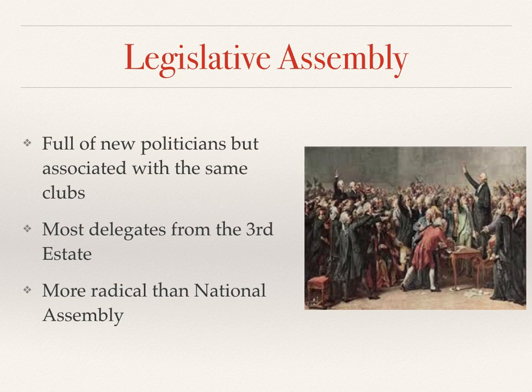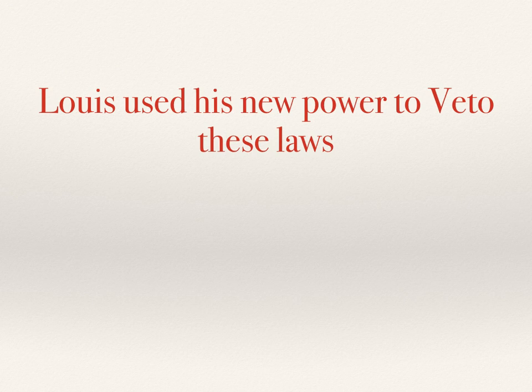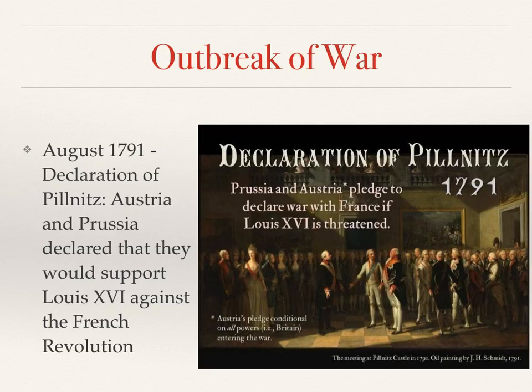This new government was more radical than the previous one, and in November of 1791 they brought through legislation declaring all of the émigrés — those are the people who had left — guilty of conspiracy, and they were to be prosecuted for it. They also brought in another law deporting any priest who wouldn't take the civic oath. Louis XVI used his new constitutional power to veto both these laws. This drew the ire of not only the government, but also those radicals in Paris. However, the event that really brought the radical element of the revolution back to the fore was the outbreak of war with Austria and Prussia.